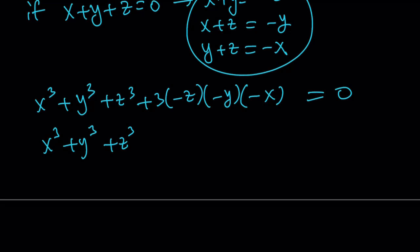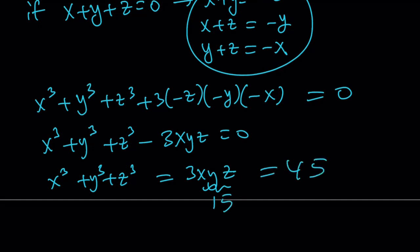Now notice that we are multiplying three negatives, so the result is negative: minus 3xyz equals 0. And this gives us x cubed plus y cubed plus z cubed equals 3xyz. We're looking for x cubed plus y cubed plus z cubed, but xyz is equal to 15, so the answer is 45.